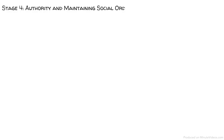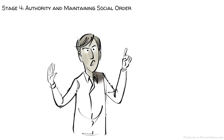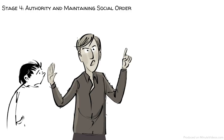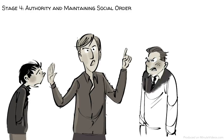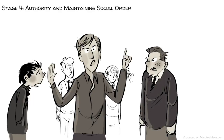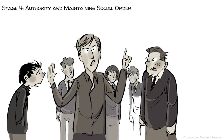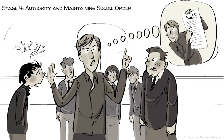At stage four, we value authority and want to maintain social order. When the teacher sees the group fighting, he immediately steps in and shouts: stop, fighting at school is forbidden. He feels that, above all, it is important to follow the rules, otherwise chaos breaks out. He feels it is his duty to uphold the rules that sustain a functioning society. He asks himself: how can I maintain law and order?